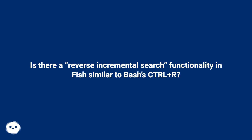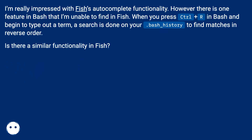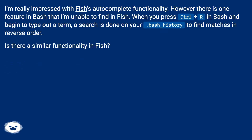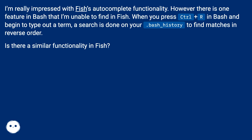Is there a reverse incremental search functionality in Fish similar to Bash's Ctrl+R? I'm really impressed with Fish's autocomplete functionality, however there is one feature in Bash that I'm unable to find in Fish. When you press Ctrl+R in Bash and begin to type out a term, a search is done on your .bash_history to find matches in reverse order. Is there a similar functionality in Fish?